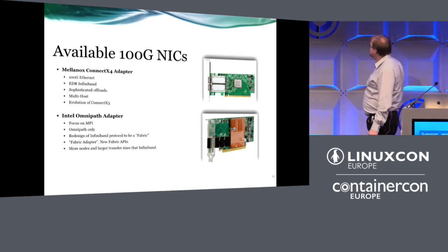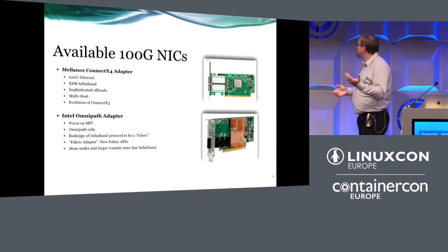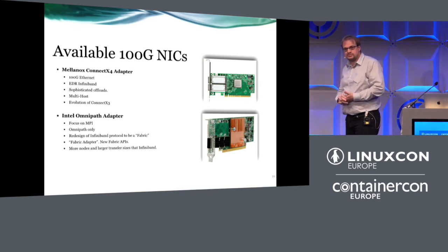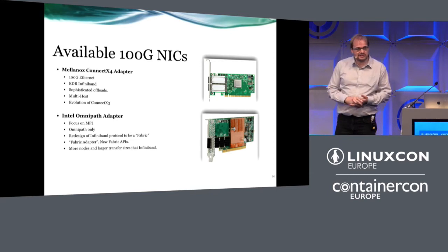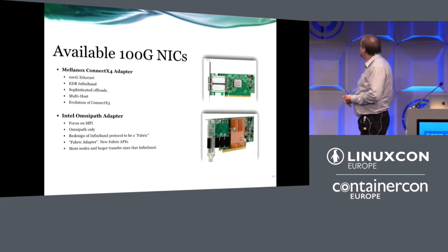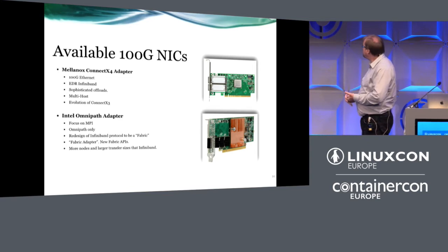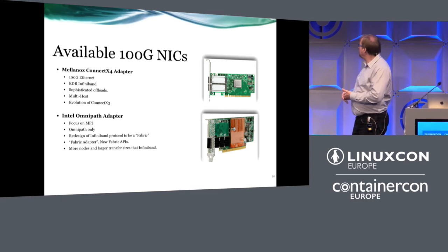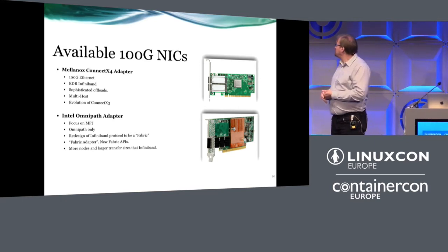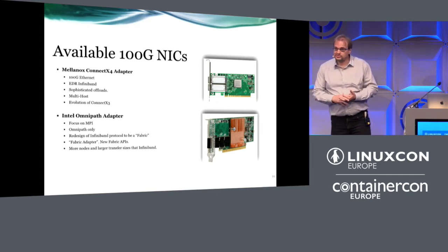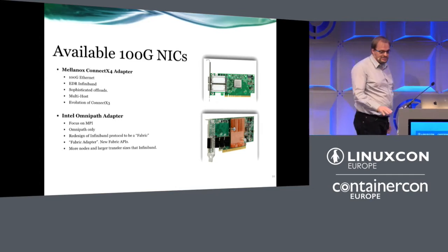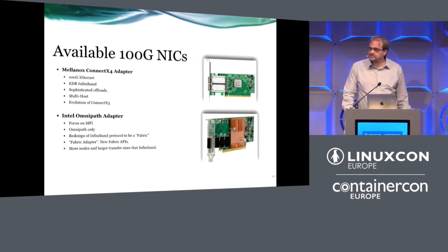The Intel Omnipath adapter is focused on MPI and does Omnipath only. It represents a redesign of the InfiniBand fabric to remedy deficiencies seen over the last few decades, and is called a fabric adapter. It supports more nodes and larger transfer sizes than InfiniBand. However, it is its own protocol only, so you must enter the Omnipath world to use it. Whereas with the ConnectX-4 adapter, you can play around with both Ethernet and InfiniBand.